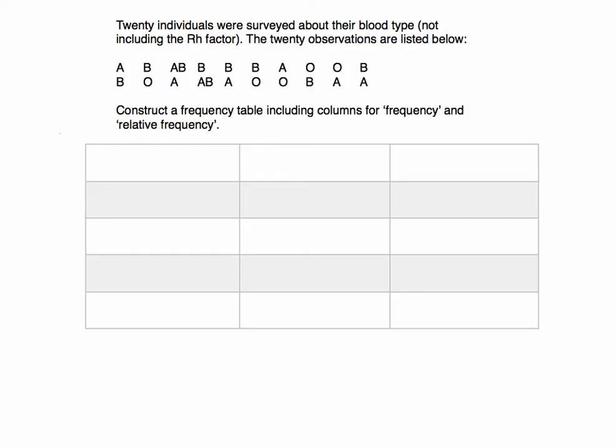In this video, I'd like to construct a frequency table by hand. We are told 20 individuals were surveyed about their blood type, not including the Rh factor which is the positive or negative, so we're just looking at the letters A, B, AB, and O. These are the observations that we got.